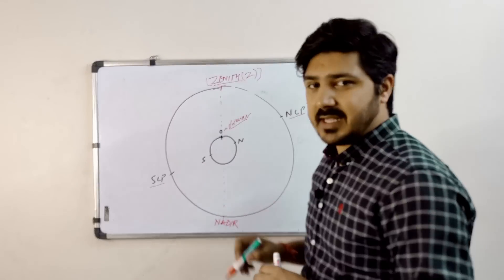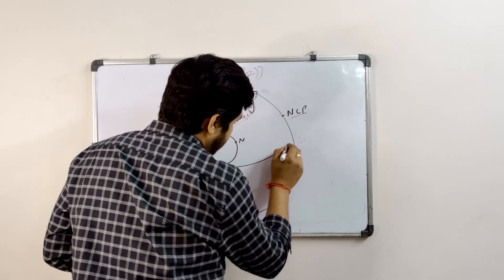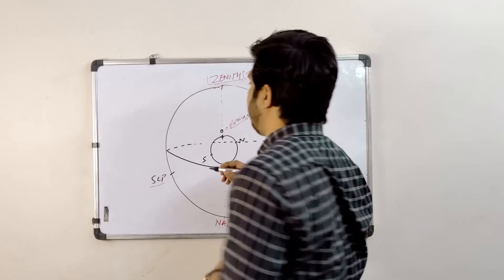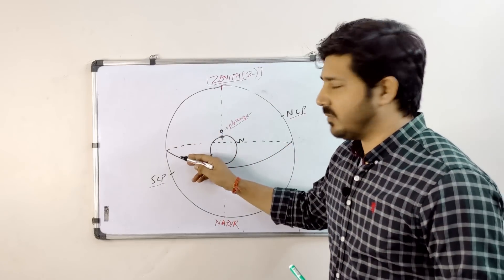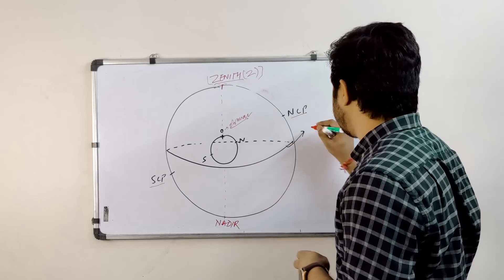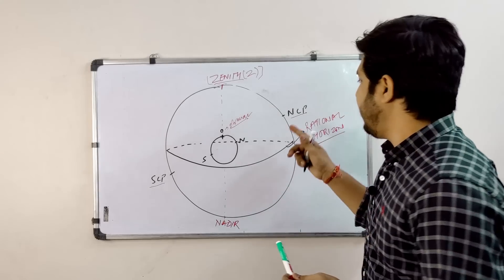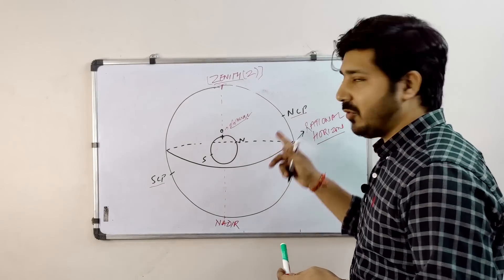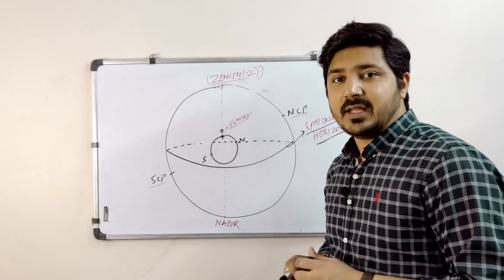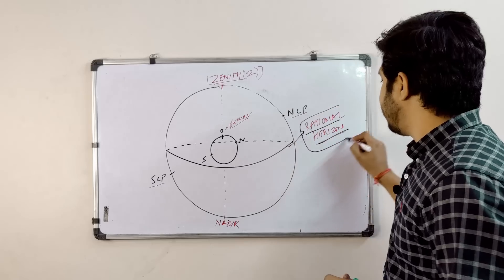For navigation purposes, nadir is not that usable — mostly we will refer to zenith. Now we will make a plane which is 90 degrees away from the zenith. All the points from zenith to this sphere are 90 degrees away, and this sphere is known as the rational horizon — just like the 90-degree points away from the celestial pole give us the equinoxial.